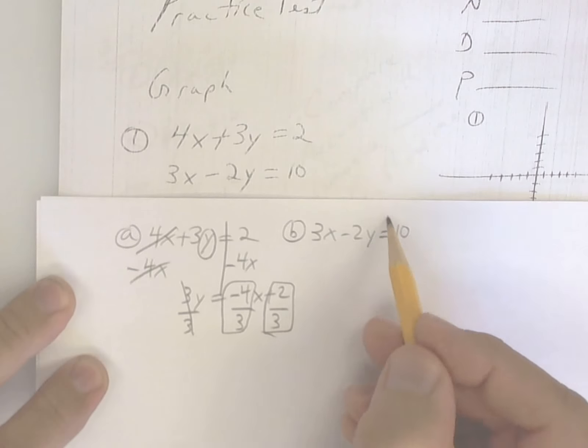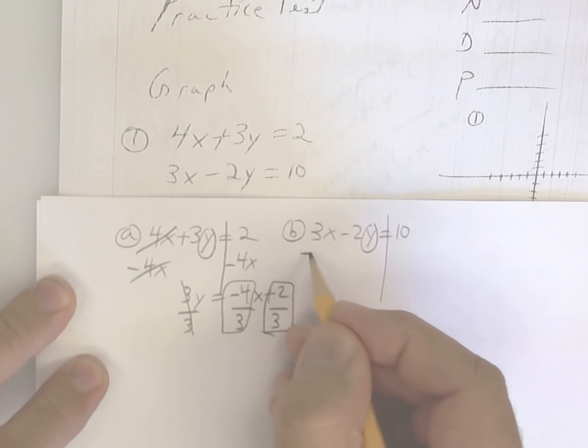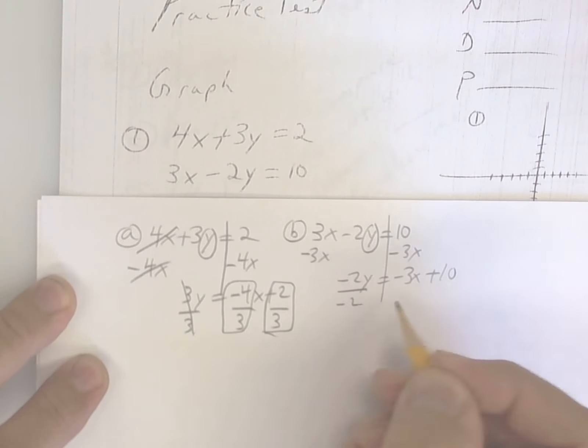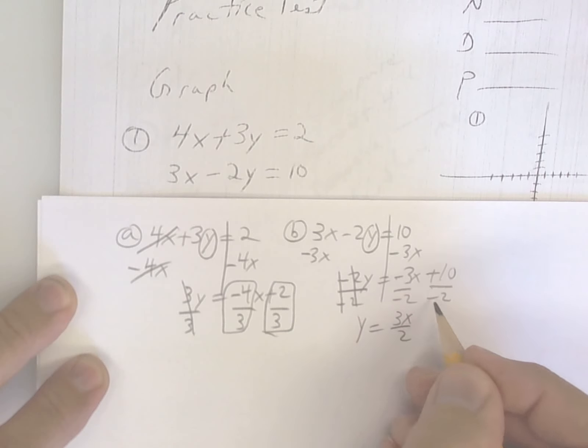The next one. Subtract 3x, divide by negative 2. y is equal to negative divided by negative is a positive. Positive divided by negative is a negative. Now, here's your slope. Here's your y intercept.